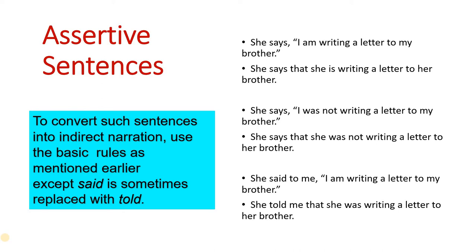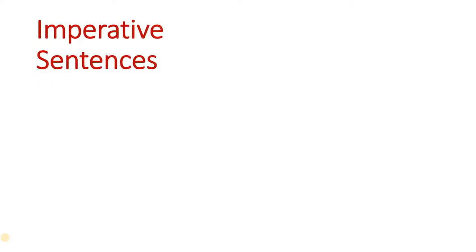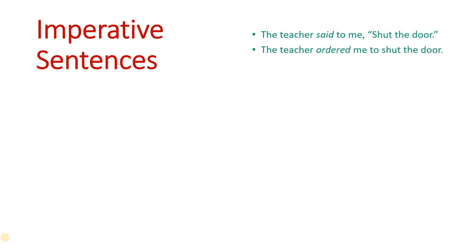To convert such sentences into indirect narration we have to use the basic rules as we saw in the earlier videos, except that sometimes 'said' is replaced by 'told' — especially when there is another object with the subject in the reporting speech. Where the person who said something to somebody is mentioned, and both people are mentioned, then 'said' is changed to 'told.'